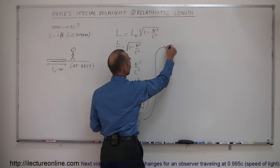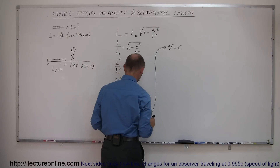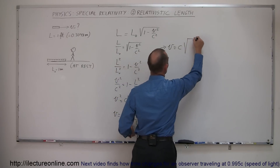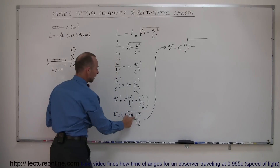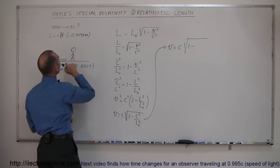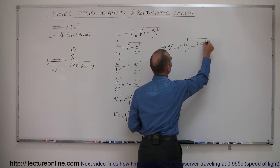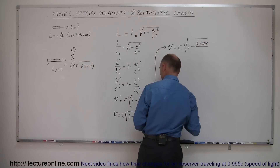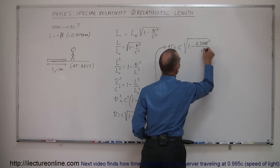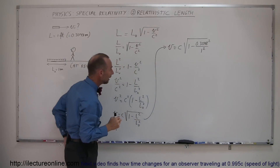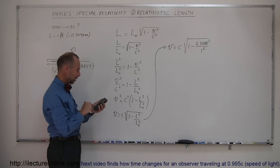So we get v equals c times the square root of 1 minus — and here the relativistic length is 0.3048 meters, which is exactly 1 foot — so we have 0.3048 meters squared, divided by 1 squared. With the calculator we figure out: take 0.3048, square it, and subtract from 1.